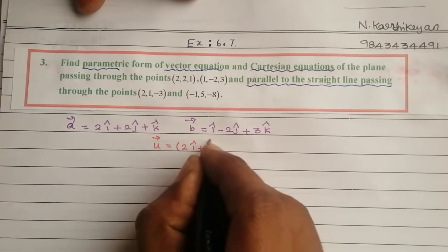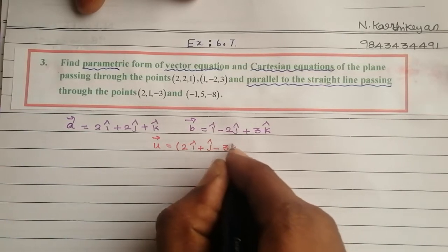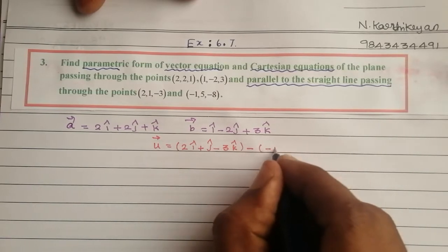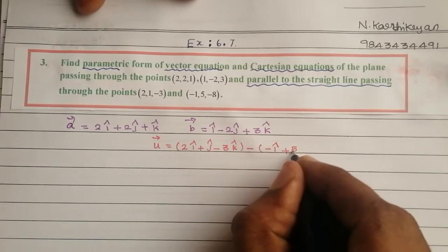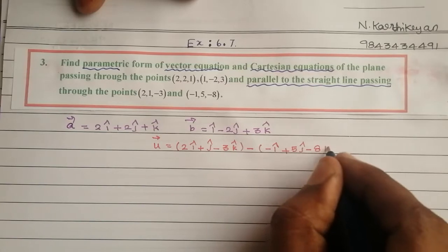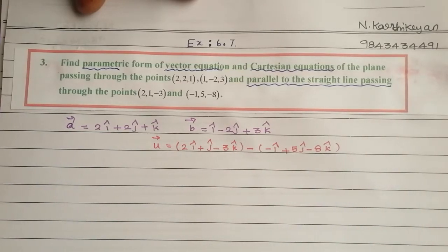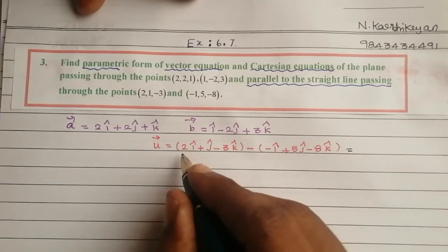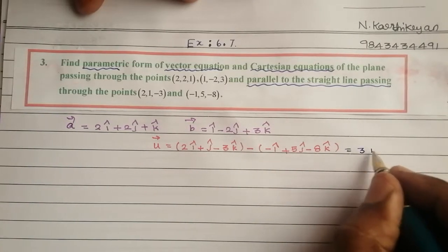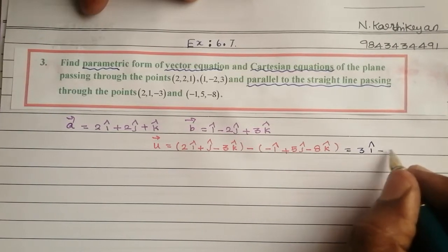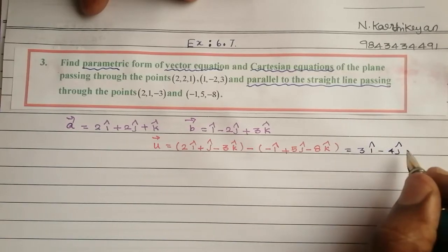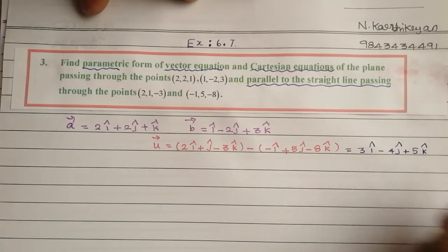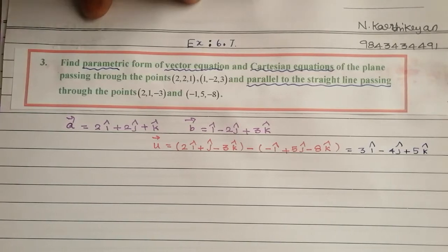The direction vector u is computed from the two points on the parallel line: (2i + j - 3k) minus (-i + 5j - 8k), which gives u vector equal to 3i-cap minus 4j-cap plus 5k-cap.